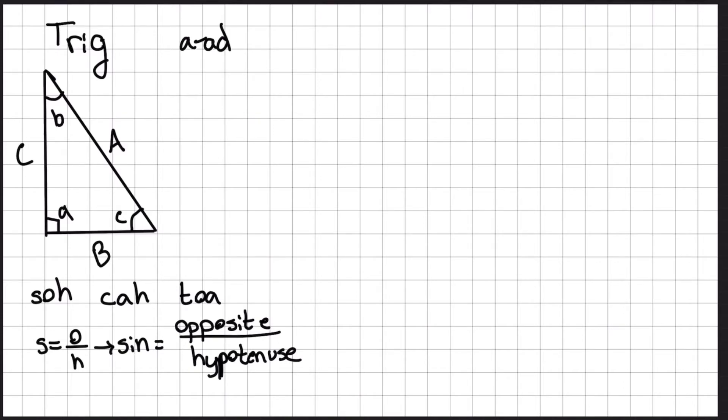Opposite is going to be a certain side with respect to that angle. Hypotenuse is going to be the longest side of the triangle. Adjacent will be a certain side with respect to the angle. And also, C means cosine and T means tangent.